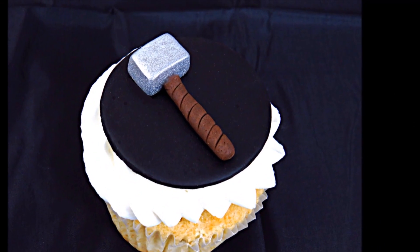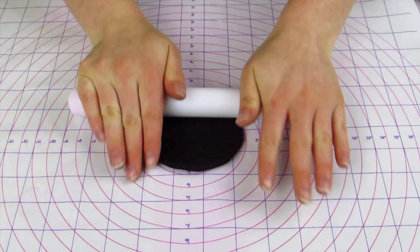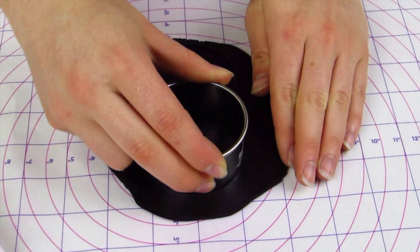Hi guys, my name is Lori and this week I thought I'd teach you how to make a Thor cupcake topper. For Thor's hammer I'm going to roll out some black fondant and this is going to be for the disc that the hammer actually sits on top of.